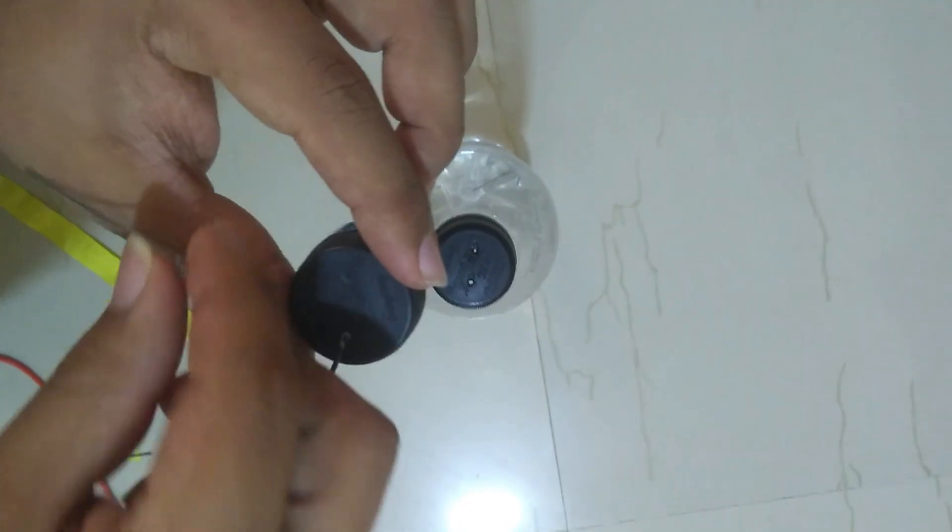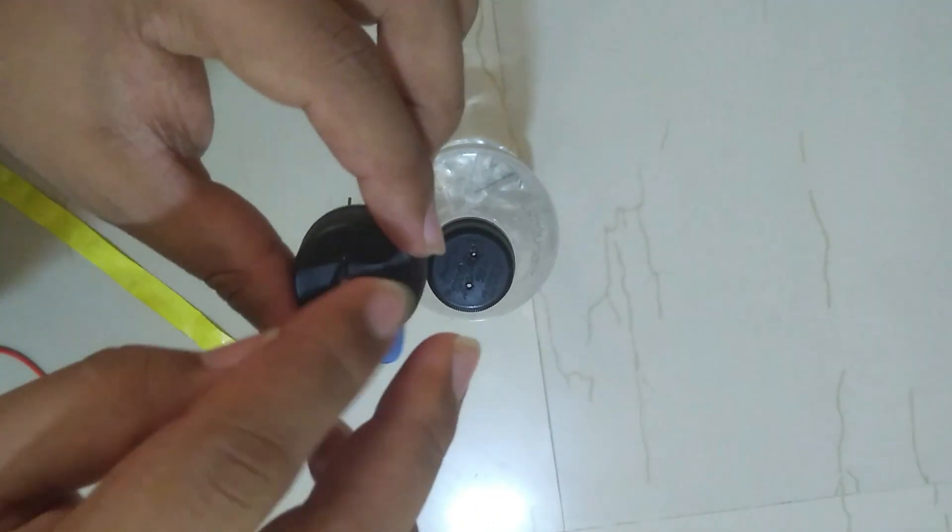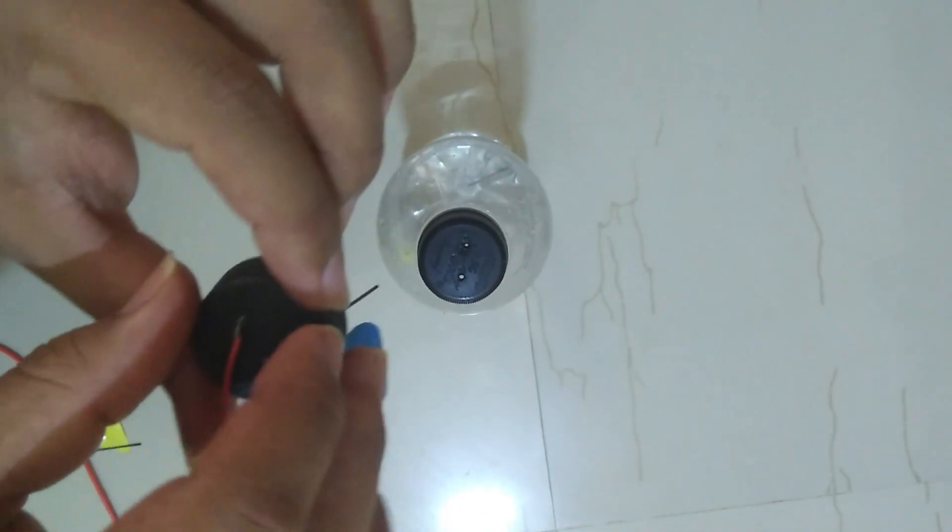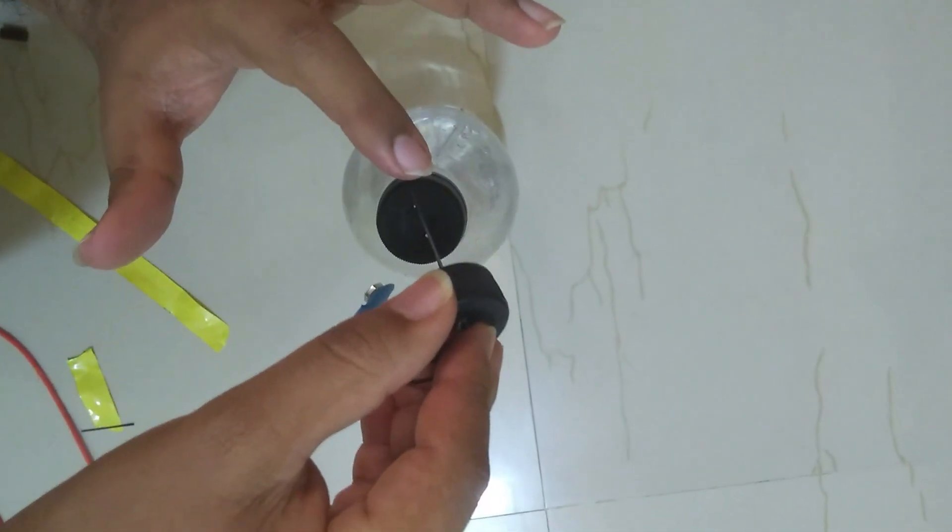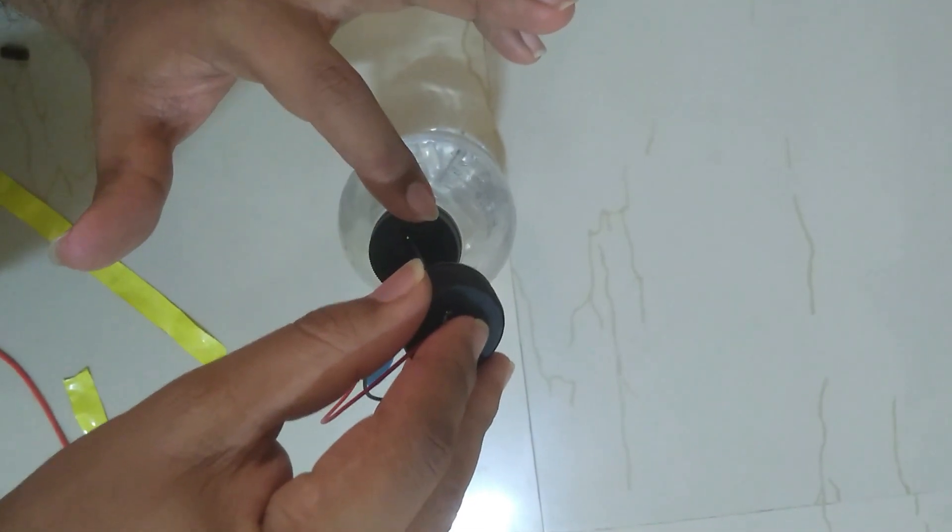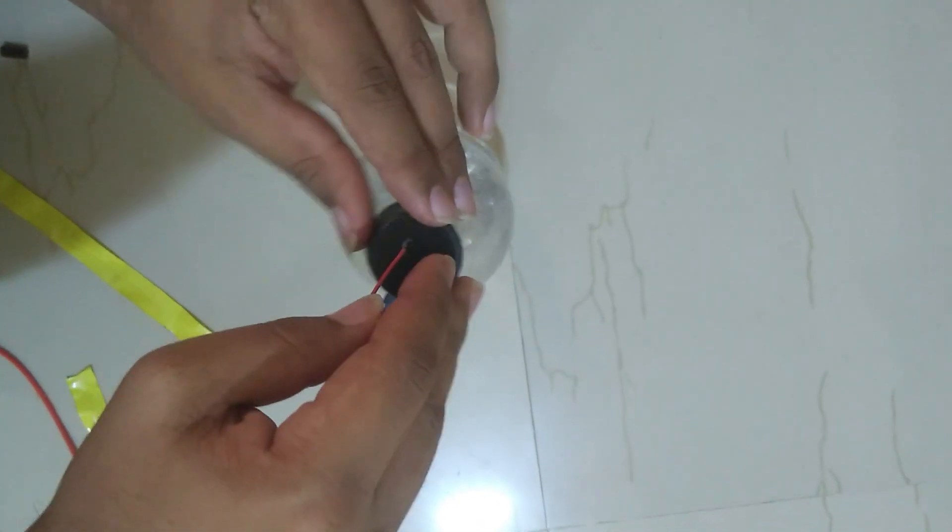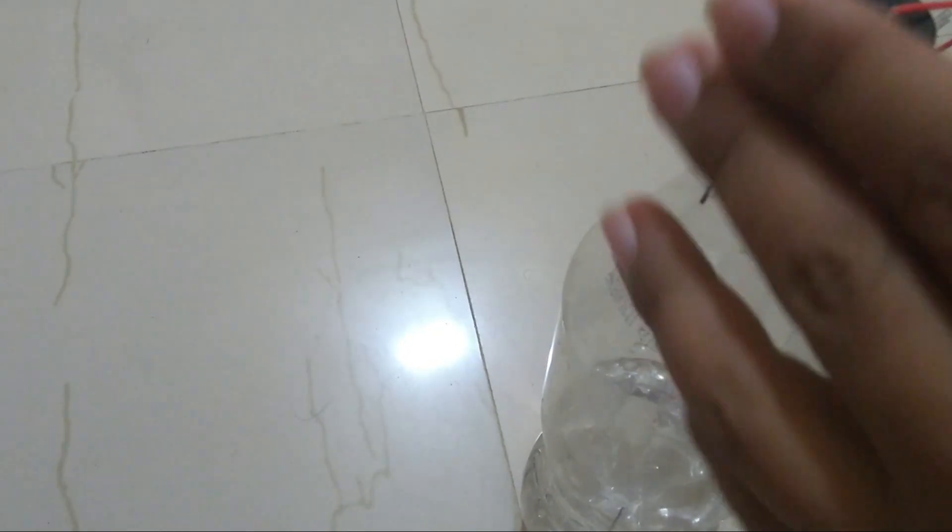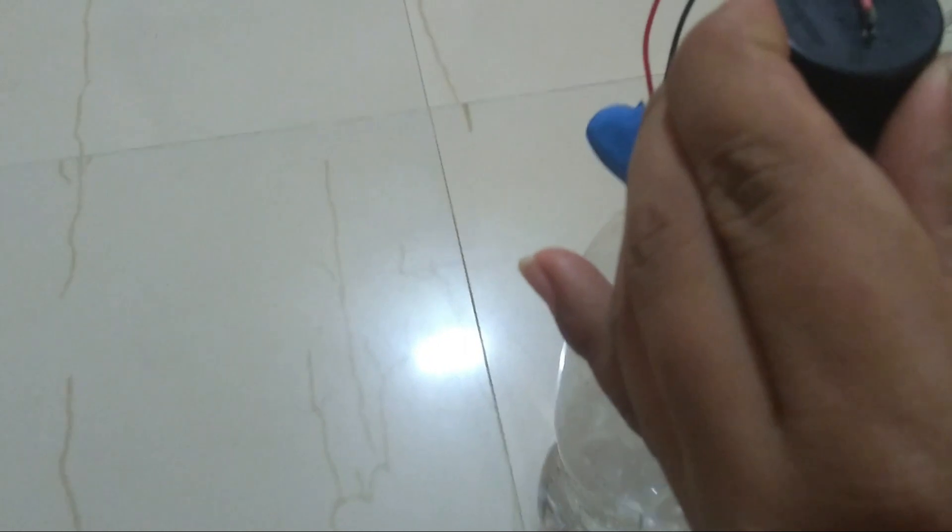These pencil leads will act as electrodes, and make sure these two electrodes should not touch each other. You can use any spacer. Here I used another bottle cap as a spacer. Once the pencil leads are attached to the cap and spacer, attach them to the bottle cap with electrical tape.